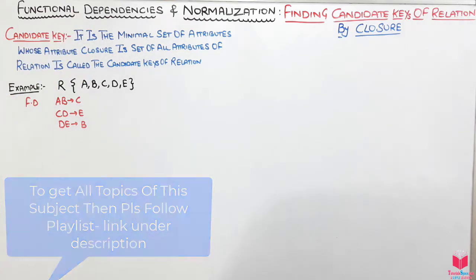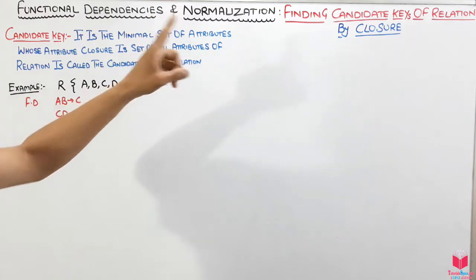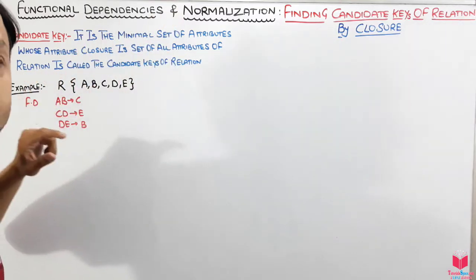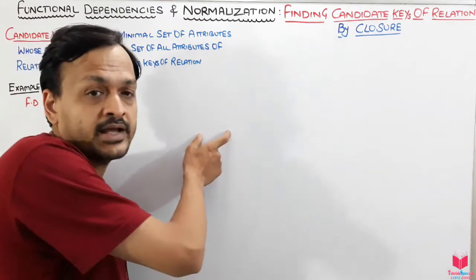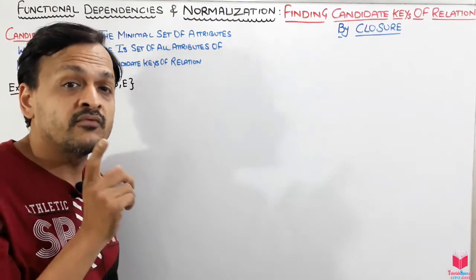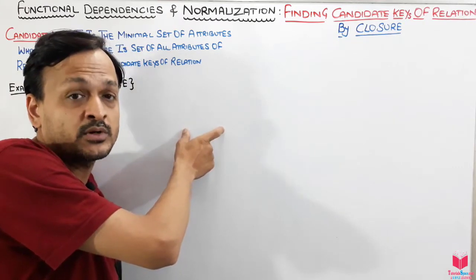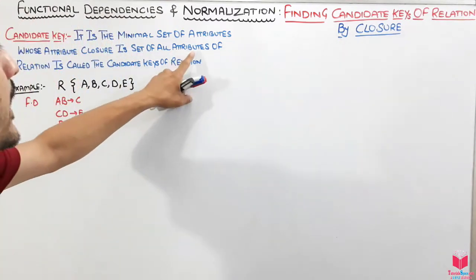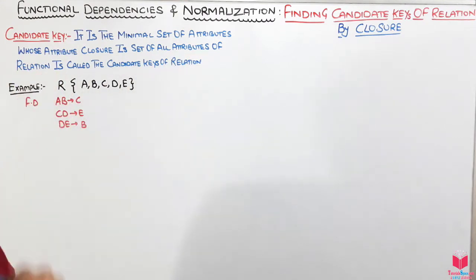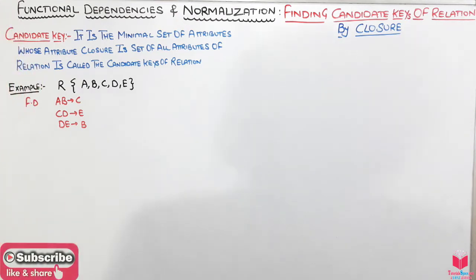The candidate key is the minimal set of attributes whose attribute closure is the set of all attributes of the relation. That means if we take the closure of that set of attributes and it gives us all the attributes of the relation, then we say that this is a candidate key of the relation.